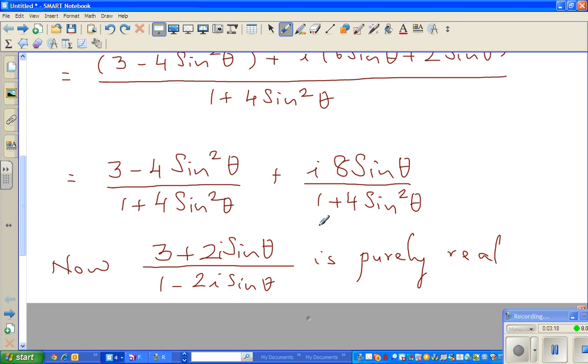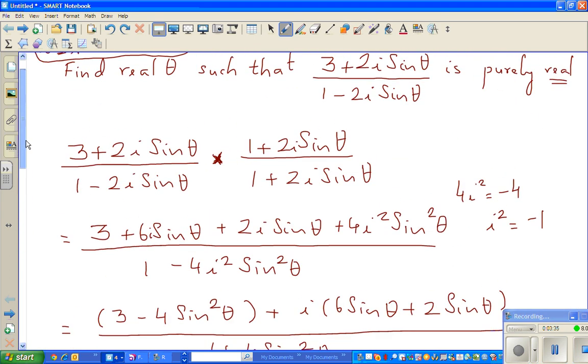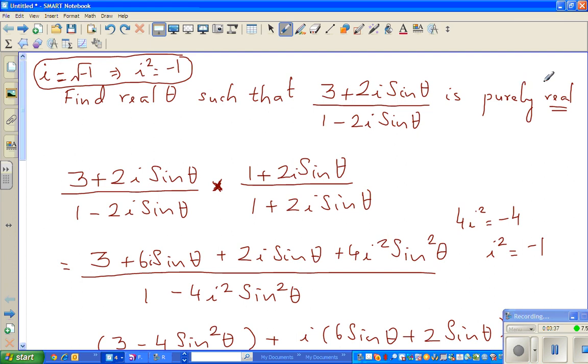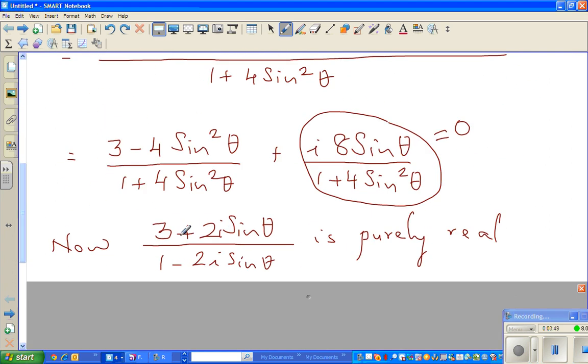Now we are saying this number is purely real—there is no imaginary part—so this actually is zero. By multiplying by the conjugate we haven't changed anything; we multiplied by 1. Now we argue: if it's purely real, there is no imaginary part, so this part has to be zero.